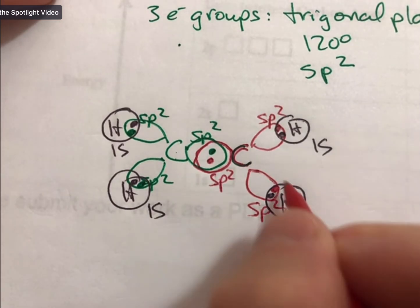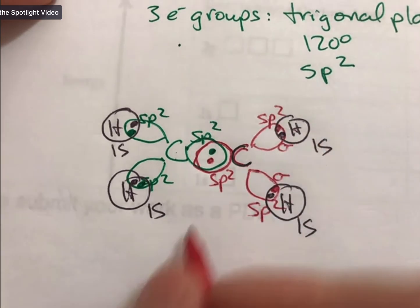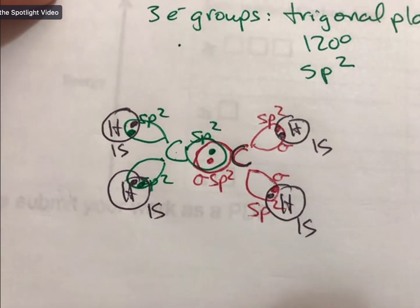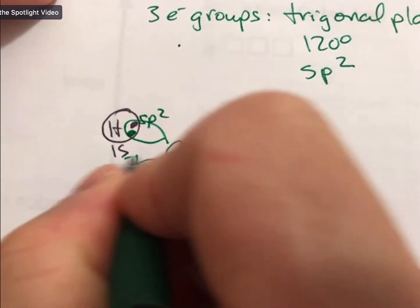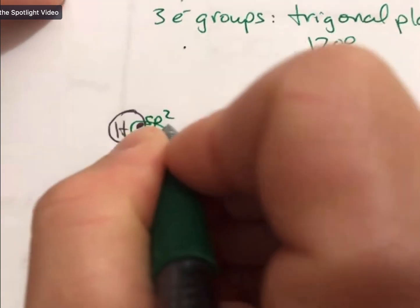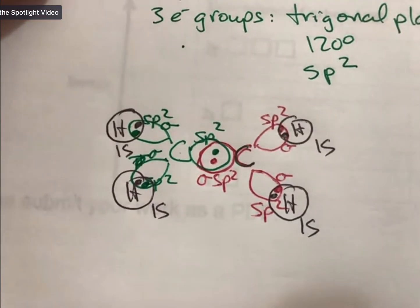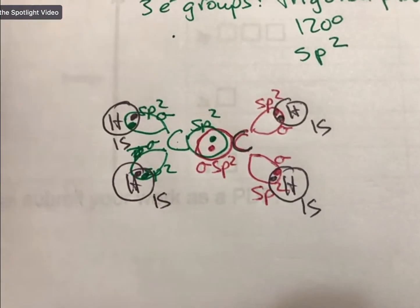So, sigma, sigma, sigma, that's another sigma, sigma, and sigma. I have not drawn the pi bond yet, but I will in just a minute.